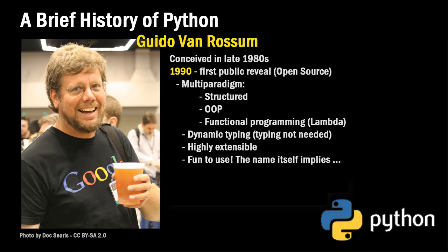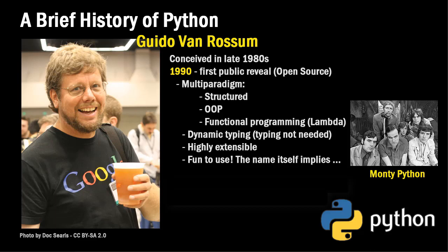Guido wanted the language to be highly extensible, but mostly he wanted it to be fun to use. That's part of where the name Python comes from. The logo appears as two intertwined snakes, but Python is not named after snakes. Guido van Rossum was a Monty Python fan — Monty Python being the British comedy troupe — and he named the language after his favorite comedy troupe.